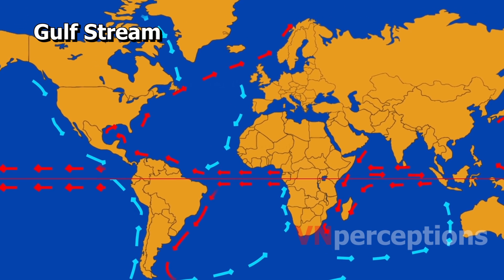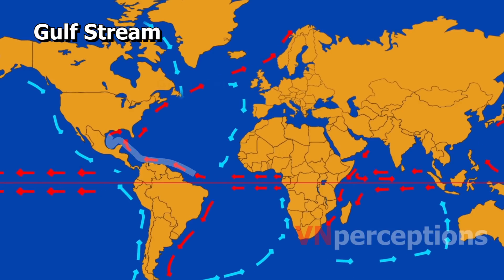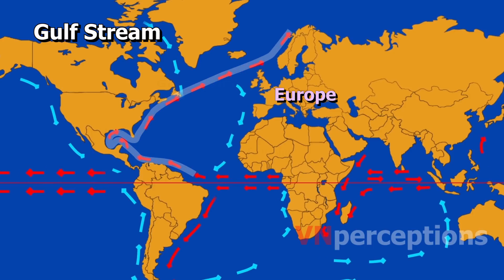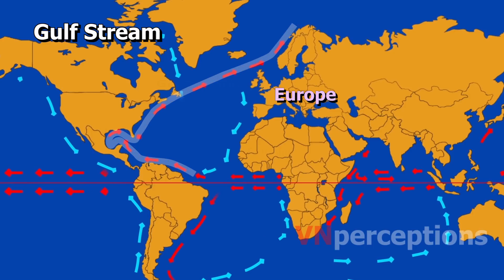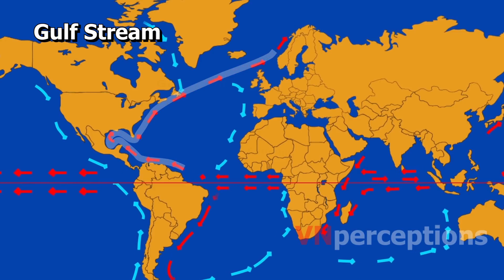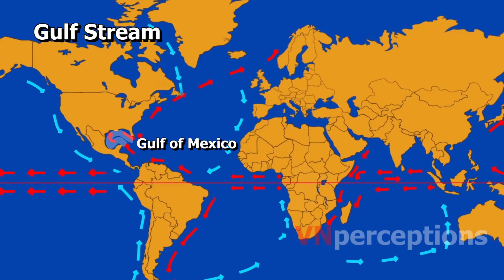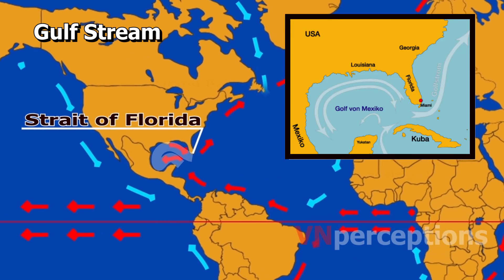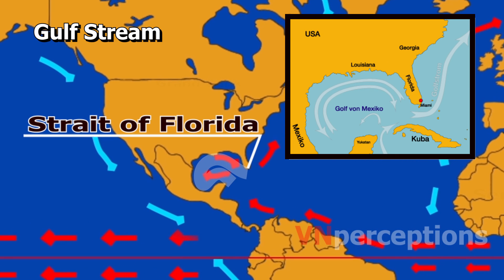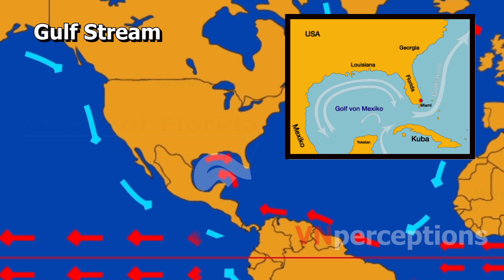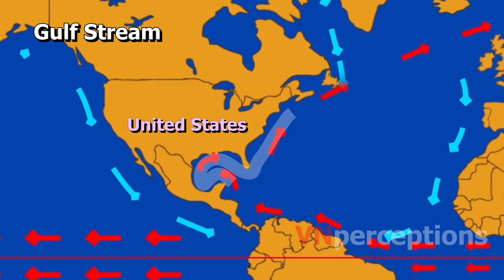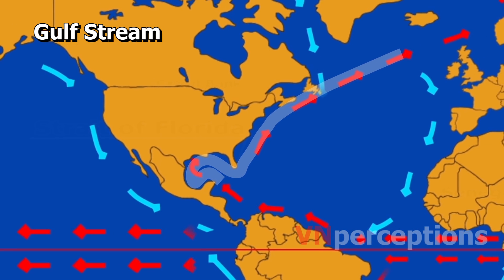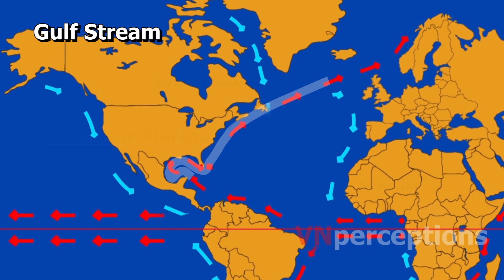Next is the Gulf Stream. The Gulf Stream, together with its northern extension towards Europe, the North Atlantic Drift, is a powerful, warm and swift Atlantic Ocean current. It originates in the Gulf of Mexico and exits through the Strait of Florida. A strait refers to a narrow strip of water which joins two water bodies. It follows the eastern coastline of the United States and Newfoundland before crossing the Atlantic Ocean.